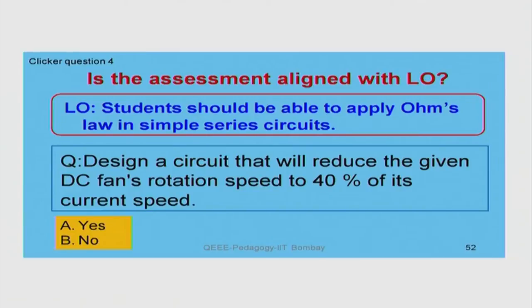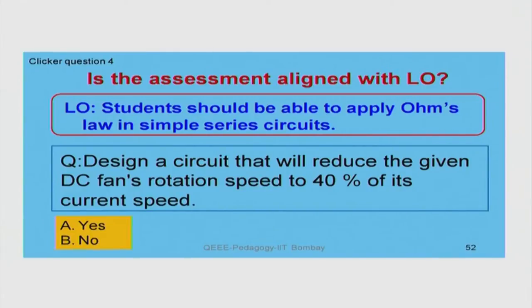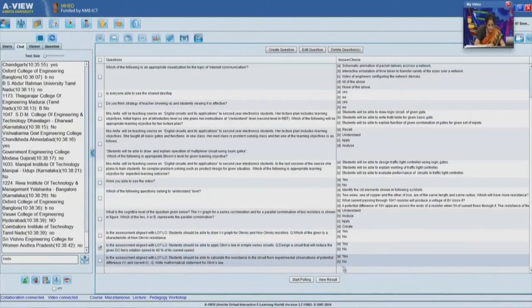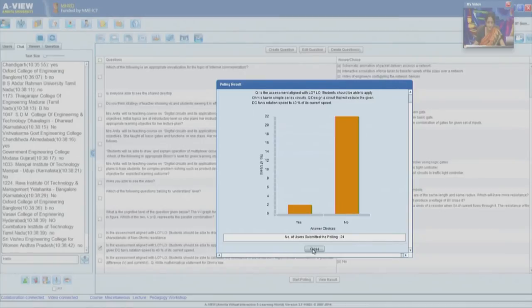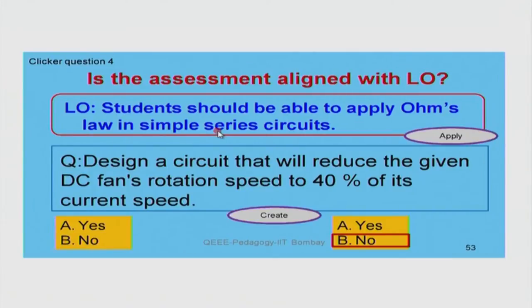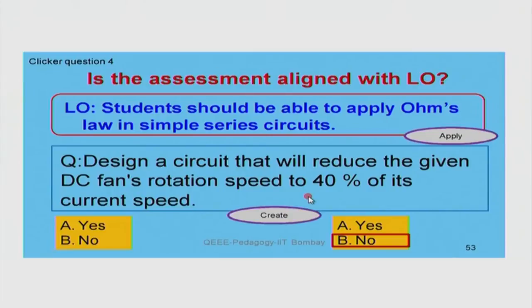Most of you have answered correctly. Here there is misalignment between the learning objective and the question. The learning objective was written for the apply level, whereas the question has been set at the create level. This is an example where we have a lower level learning objective but the question posed is at a higher level. This is a misalignment, and students will not be happy when this kind of misalignment happens in the assessment process.